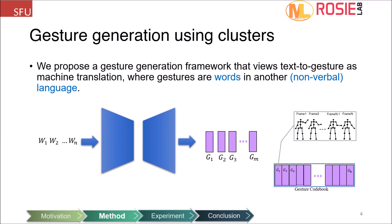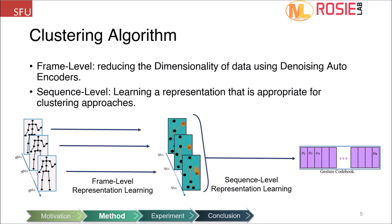We propose a gesture generation framework that views text2gesture as a machine translation task between two languages, where each gesture word or token represents a set of similar gestures in nonverbal language. Our method has two steps to cluster similar gesture sequences to a specific token. First, we learn a dense representation of single frames using a denoising autoencoder. Afterward, we learn a representation of gesture sequences suitable for clustering human motions.